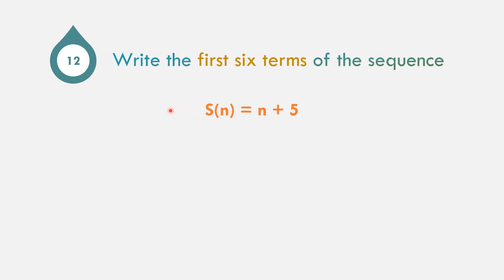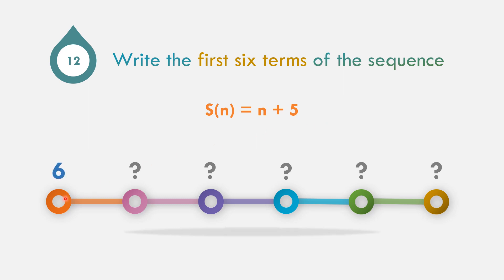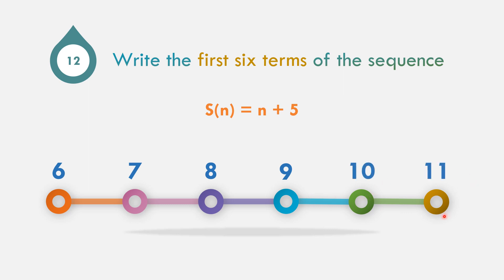In example number 12, write the first six terms of the sequence where s(n) equals n plus 5. Replace n by 1 through 6: 1 plus 5 is 6, 2 plus 5 is 7, 3 plus 5 is 8. The pattern adds 1 each time, so 8 plus 1 is 9, 9 plus 1 is 10, 10 plus 1 is 11. The first six terms are 6, 7, 8, 9, 10, and 11.